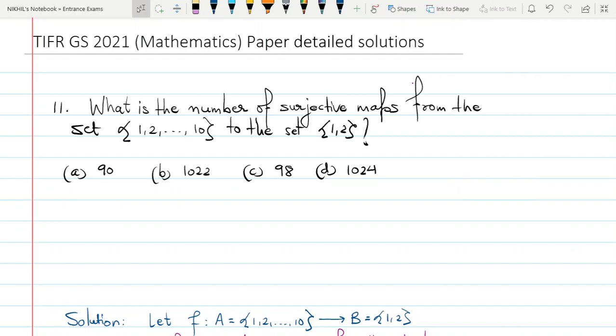It's a very simple and elementary problem based on finding the number of surjective maps from a set to another. So we should know what is the meaning of surjective. A map is said to be surjective if every element of the co-domain has at least one preimage in the domain.